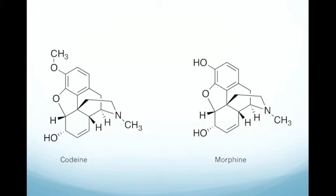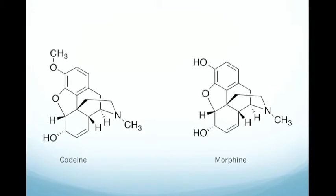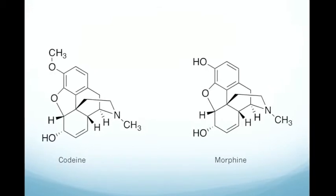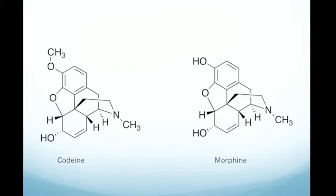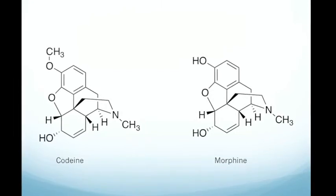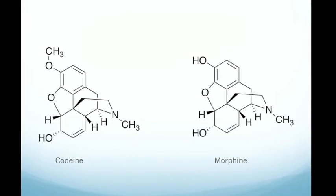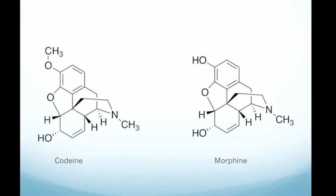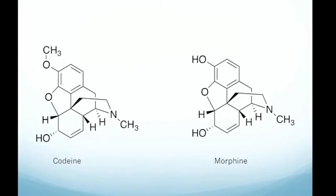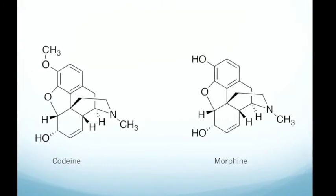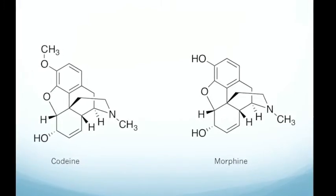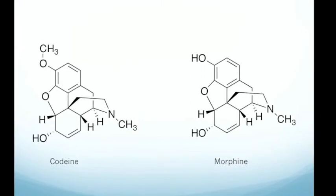Codeine itself is a pro-drug, which means the chemical is not actually the active ingredient. Instead, as the codeine passes through the liver it is converted into morphine, which then gives the desired effects. When codeine arrives in the liver the reverse of the synthesis occurs — the methyl group is removed and the hydrogen reattached, forming the hydroxyl group, thus becoming morphine.